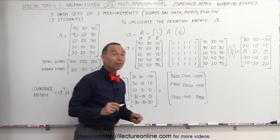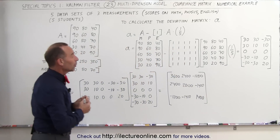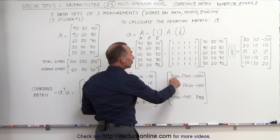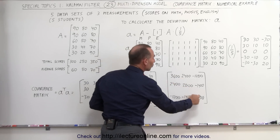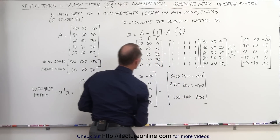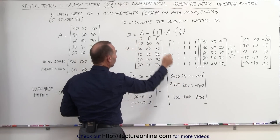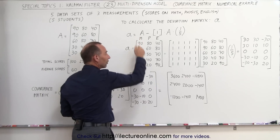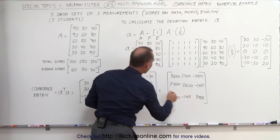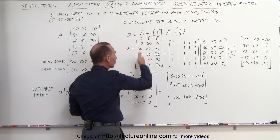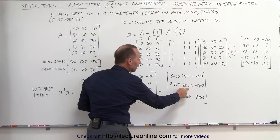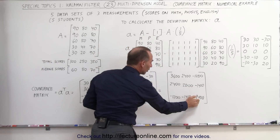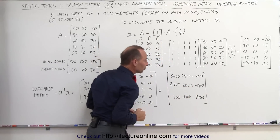And there we have our covariance matrix. Remember that the diagonal elements are the variances of the three individual scores. The variance of the math score is 3,600 — the largest variance. The second largest variance is in the physics scores at 2,000, and the third largest variance is in the English scores at 1,400.